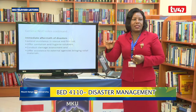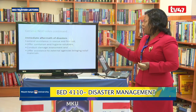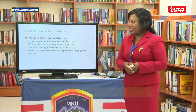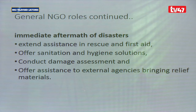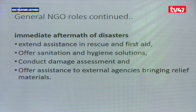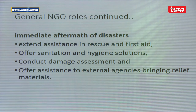What is the role of NGOs immediately after a disaster — in the immediate aftermath? Number one, they extend assistance in rescue and first aid, being on the spot trying to rescue and bring first aid to affected people. Number two, they offer sanitation and hygiene solutions. They also conduct damage assessments and offer assistance to external agencies bringing in relief materials.